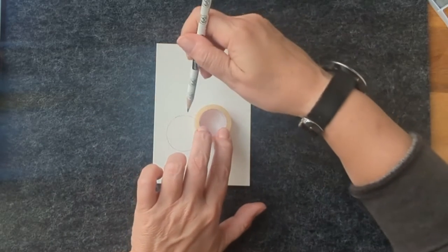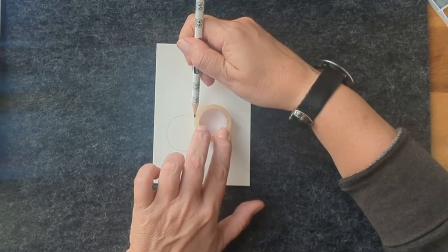Paint the second circle slightly offset behind the first one.